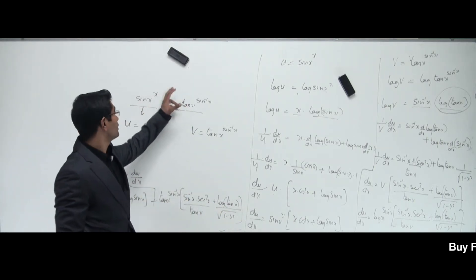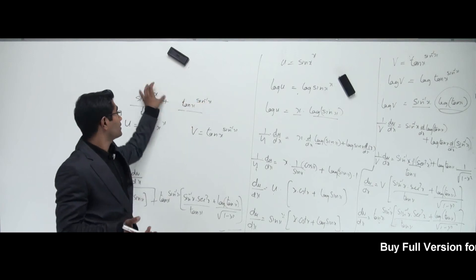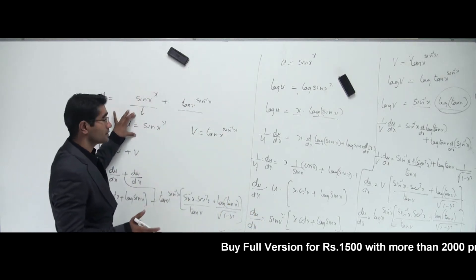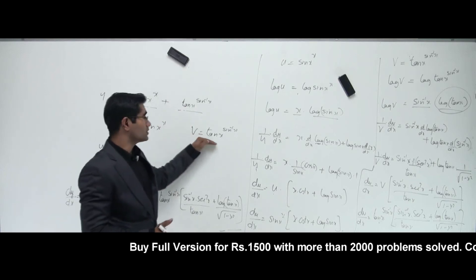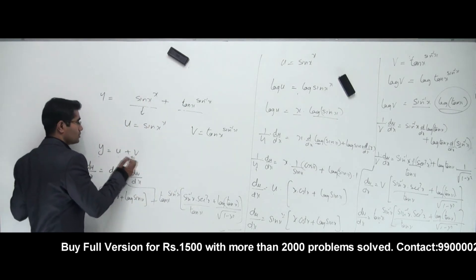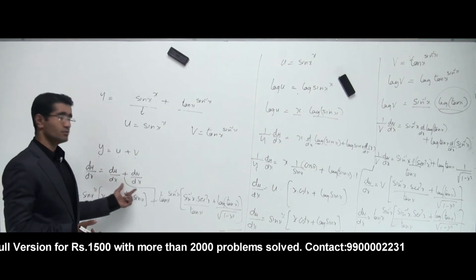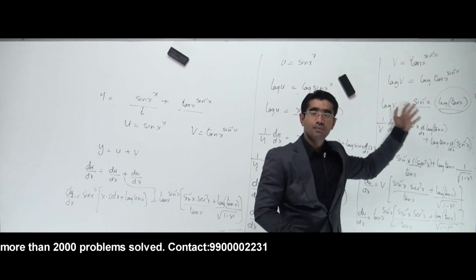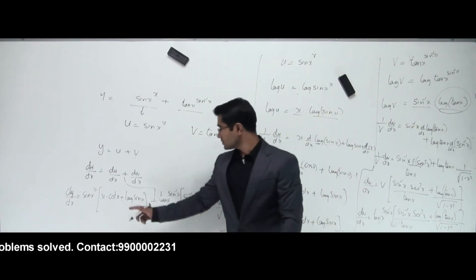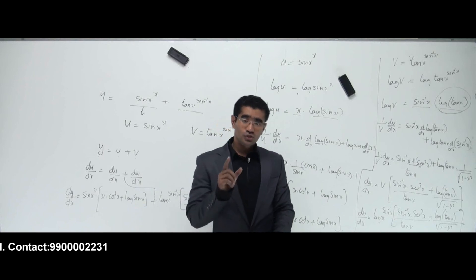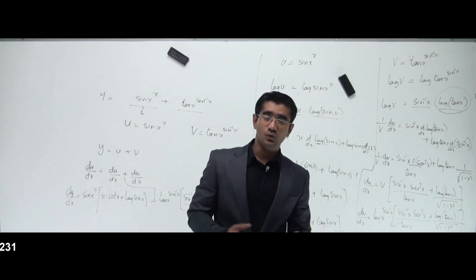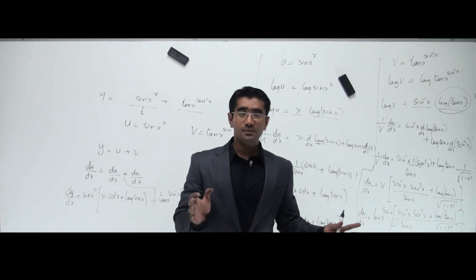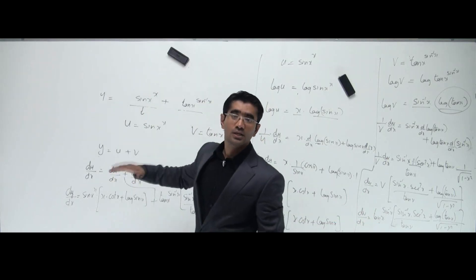So what we learned here: if I have two functions both with exponents that are functions themselves, I can't use log on both sides directly because there's no formula for log(u + v). Instead, I name them u and v separately, so y = u + v, then dy/dx = du/dx + dv/dx. I find each derivative by applying log separately to each function. It's all the same chain rule, product rule, and quotient rule — just with this extra step of using log on both sides to bring the exponent down.